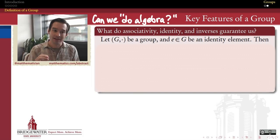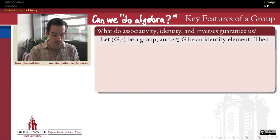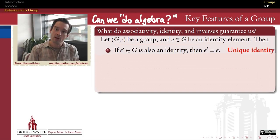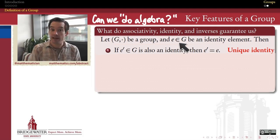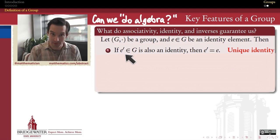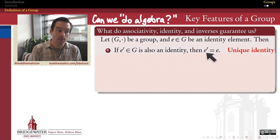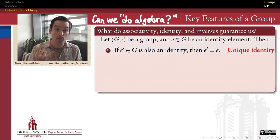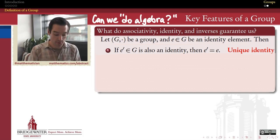So what do associativity, identity, and inverses actually get us? How can we still do algebra? The first property is the uniqueness of the identity element. So if E is an identity element in my group, and E prime is also an identity element in my group, then we'll be able to show that E prime must be the same thing as E — there cannot be more than one different identity element inside of any given group.